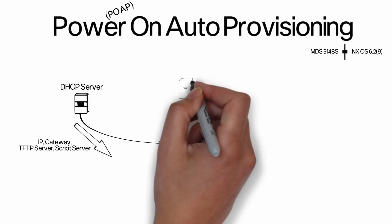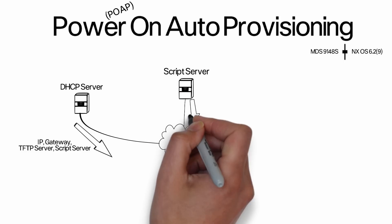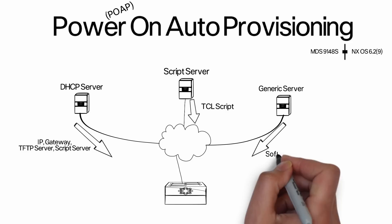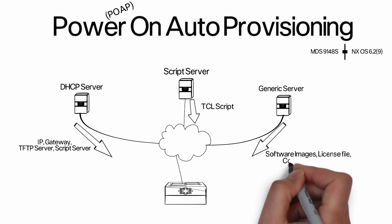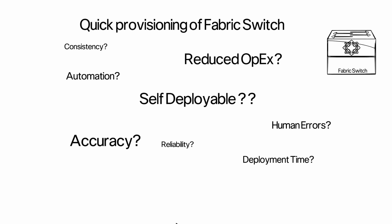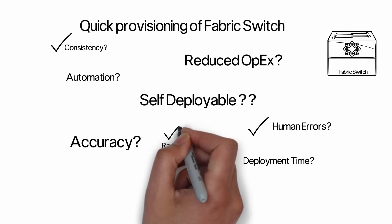Along with providing an IP address to the fabric switch, the DHCP server also points to a script location and name, which the fabric switch downloads and runs. The best part is Cisco provides a ready-to-use POAP script that automates tasks like upgrading the software, managing the license file, and managing the configuration.